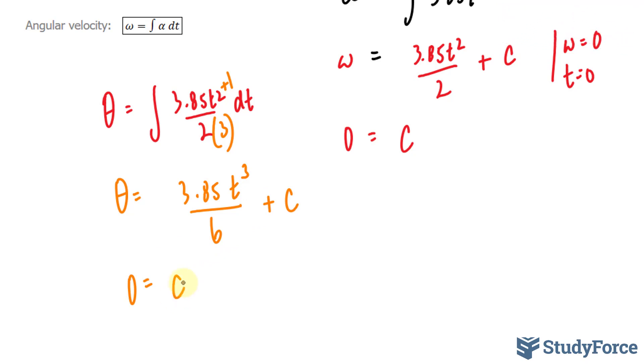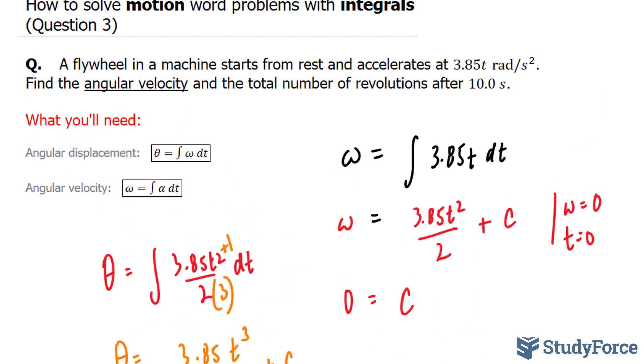Therefore, our angular displacement formula is theta equals 3.85 divided by 6 t to the power of 3. The last part of this question asks us for the total number of revolutions after 10 seconds.